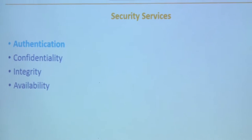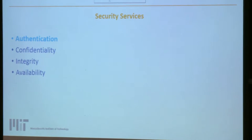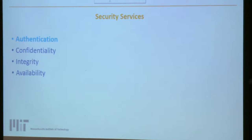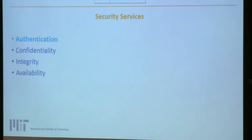The first and most important security service we need to provide for a secure IoT application is authentication — meaning two communicating parties can prove each other's identity and establish secure communication. Once authentication is provided, all other security services can be built on top of it: confidentiality, meaning information cannot be disclosed unless to the legitimate owner; integrity, meaning data arrives intact as sent; and availability, meaning services are there when needed.